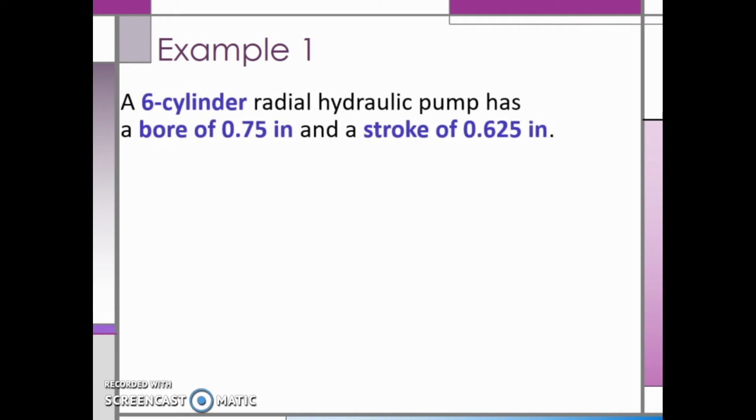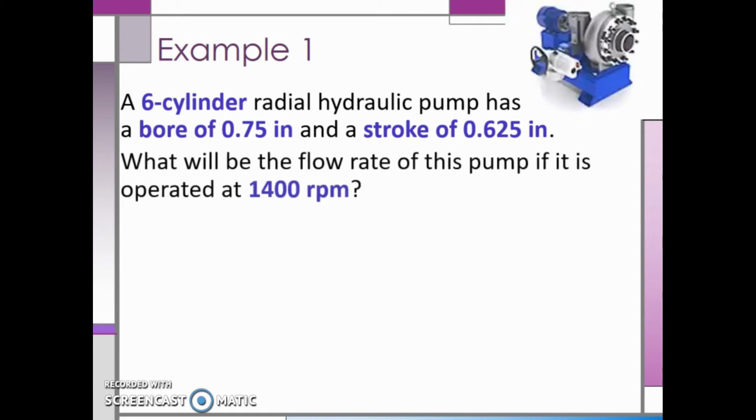Let's take a look at an example on how to find the piston pump displacement and flow rate. A six-cylinder radial hydraulic pump has a bore of 0.75 inches and a stroke of 0.625 inches. What will be the flow rate of this pump if it is operated at 1,400 revolutions per minute?